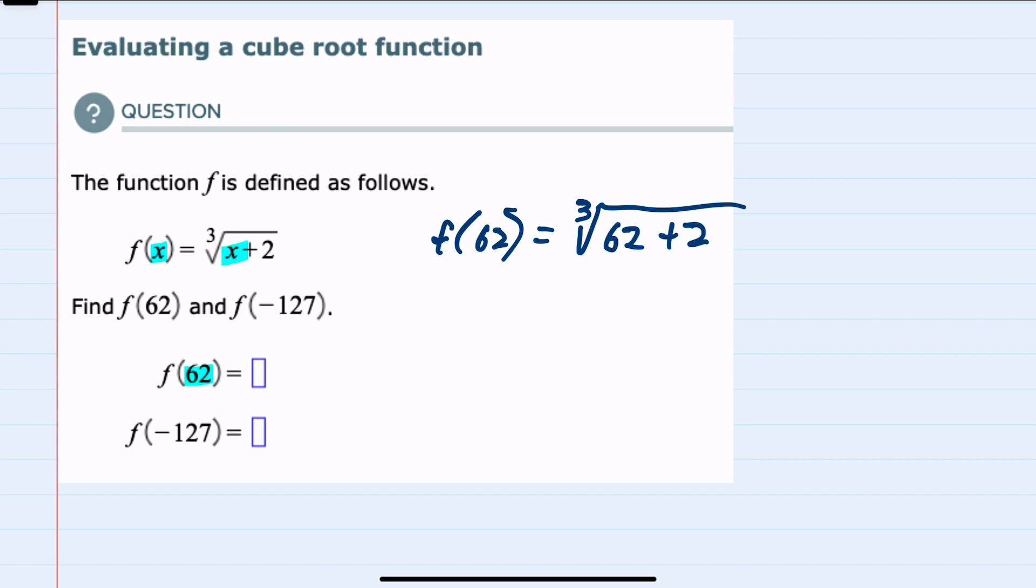Then following the order of operations, inside the cubed root works like a grouping symbol, so I would have to do that addition first, and that would give me the cubed root of 64.